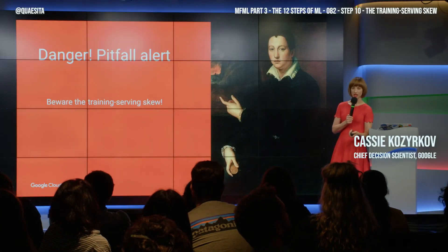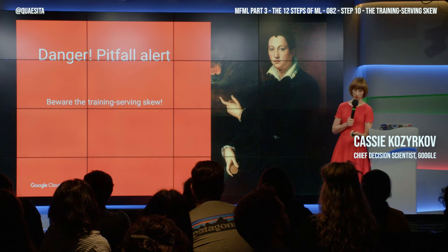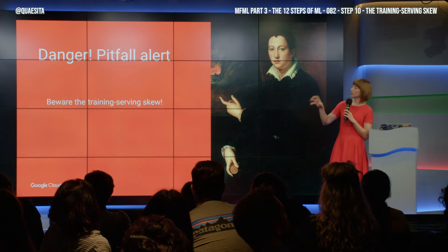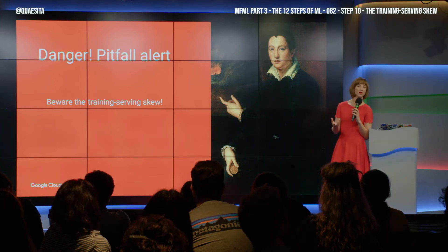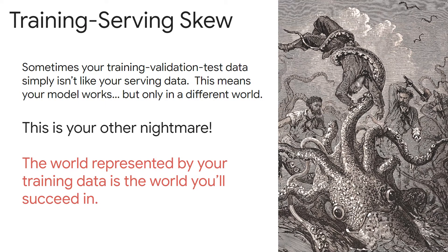Always beware the training-serving skew. The world you trained this model in is the world it's going to succeed in. Sometimes your training, validation, and test dataset that you use for prototyping just isn't like the data that you deal with live. And so any model you've tested and shown works — just works in a different world. Works in the world you tested it in, and maybe it doesn't work in yours.